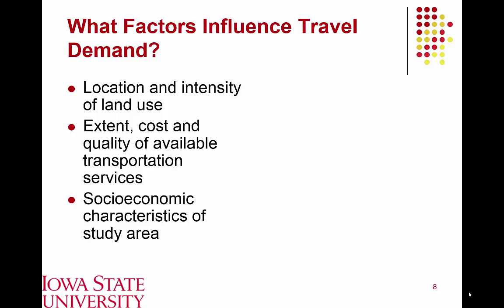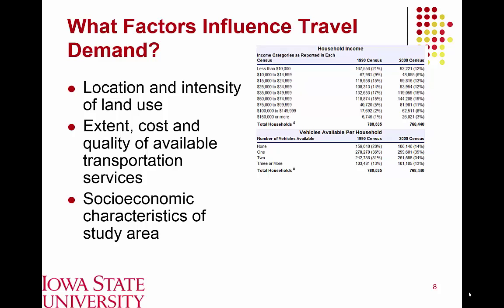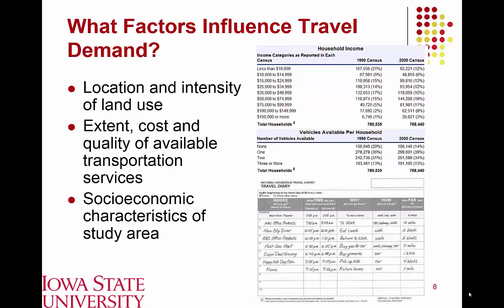Additional factors include the characteristics of the study area — who lives or works there and how well developed the transportation network is. Data to develop these models comes from the census, collected every 10 years, which provides information on income and vehicles per household. Higher-income households and households with more vehicles tend to make more trips. Travel diaries and travel surveys — such as the national household travel survey and the long-form census — also provide detailed travel behavior data.